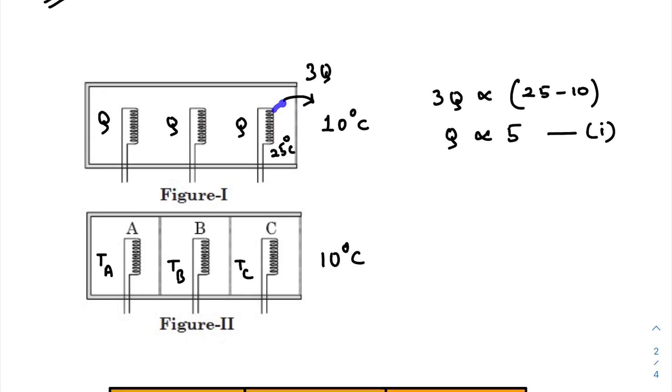Anyways, the total heat emitted should be equal to the total heat created per unit time, then only you can achieve a steady state, right? So per unit time, 3Q amount of heat should come out from this chamber. They have already provided that the temperature inside the chamber is 25 and outer temperature is 10.